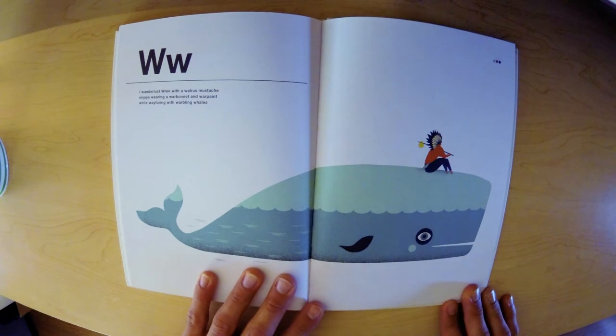W. Wanderlust Wren with a walrus mustache enjoys wearing a war bonnet and war paint while wayfaring with warbling whales.